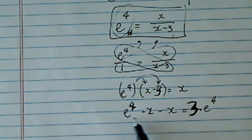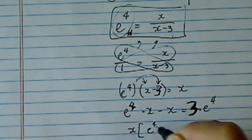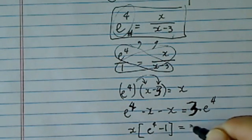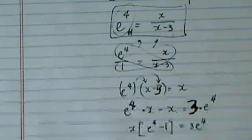Let's see, I'm going to make sure, e to the 4 minus 1 and 3. Now let's pull the x out, so I have e to the 4 minus 1 is equal to 3 e to the 4.